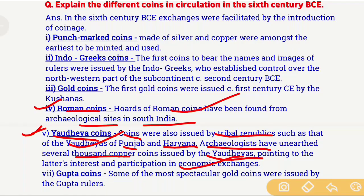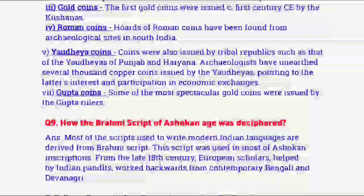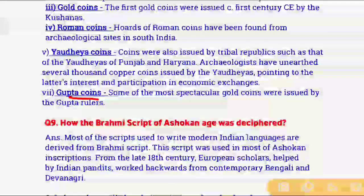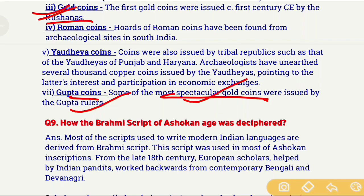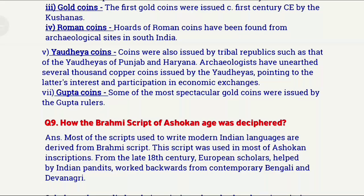The last coin is the Gupta coin. Some very spectacular and splendid golden coins were also issued by Gupta rulers. However, remember that the very first golden coin was issued by the Kushana rulers, and the most spectacular golden coins were issued by the Gupta rulers. With this, question number 8 is also complete.